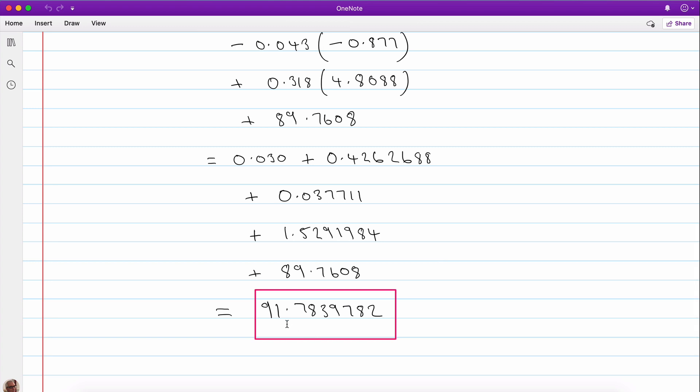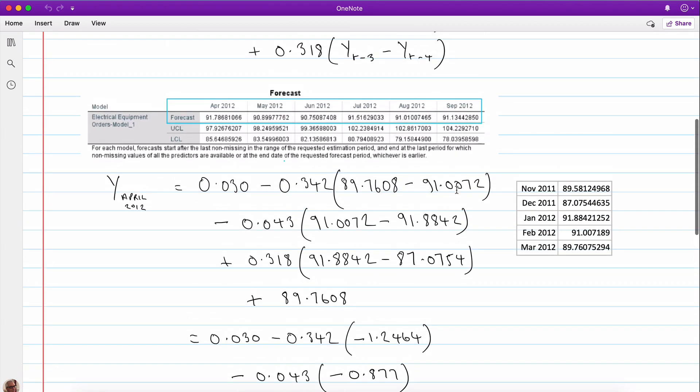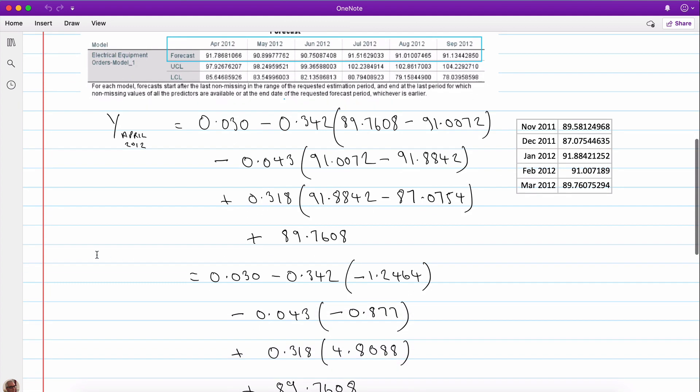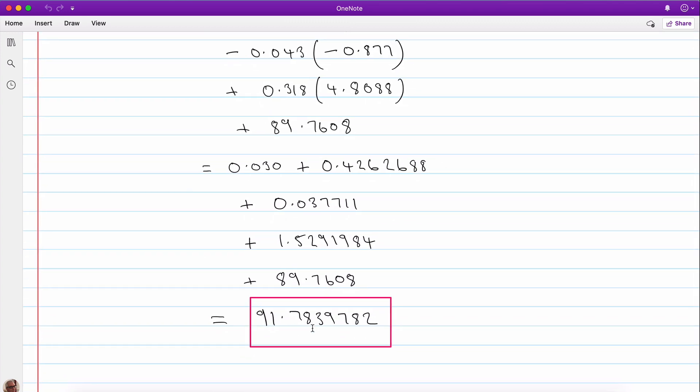And finally don't forget the plus 89.7608. And if you work this out with your calculator, this is what you get: 91.7839782. Now if you compare that with the forecast from SPSS, it's not quite the same, but that's because SPSS will have used the full eight decimal places rather than the four I used. But as you can see it's essentially the same, 91.78, which is what I've got here.